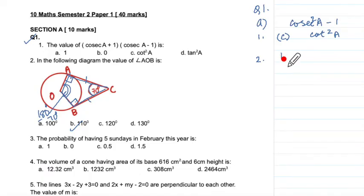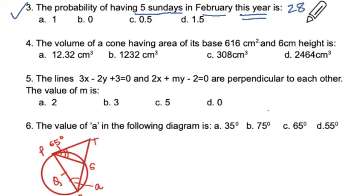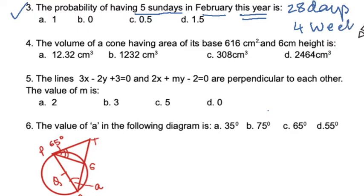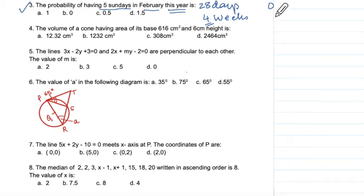The answer is B — 110 degrees. Part C: the probability of having five Sundays in February this year. February has 28 days, which means exactly four complete weeks. So every day of the week appears exactly four times — there is no fifth Sunday. The favorable outcomes are zero, giving a probability of zero. The answer is B.